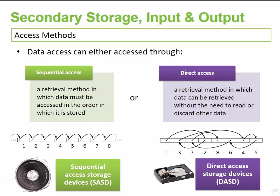When information is saved, it can take place through one of two access methods: sequential access or direct access. Sequential access is a retrieval method in which data must be collected in the order in which it is stored. Imagine a notepad where all the information is written one after another — you go through the whole list in order to get your information. One record is saved after another, so if you want a specific record, you must start at the beginning.